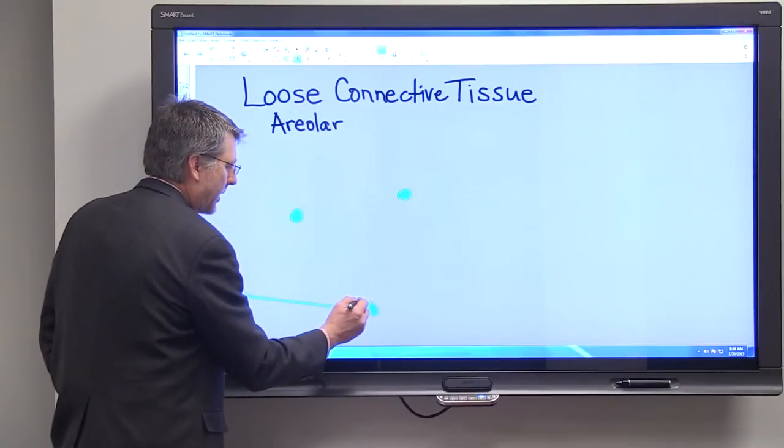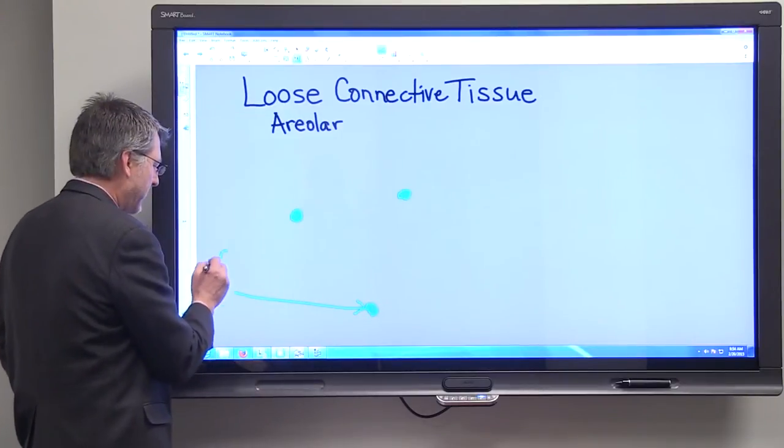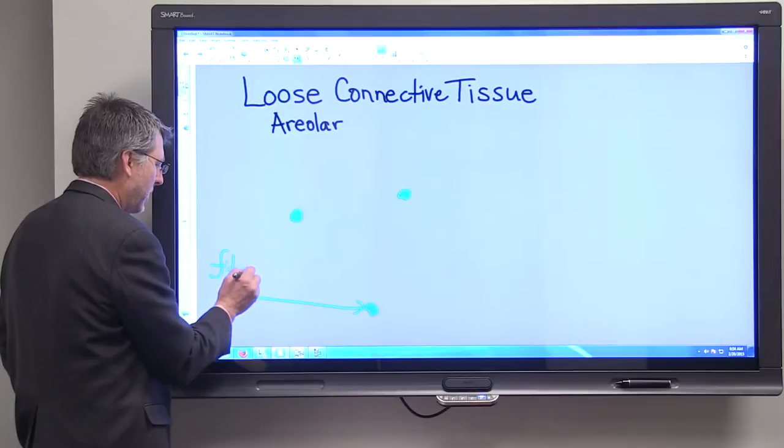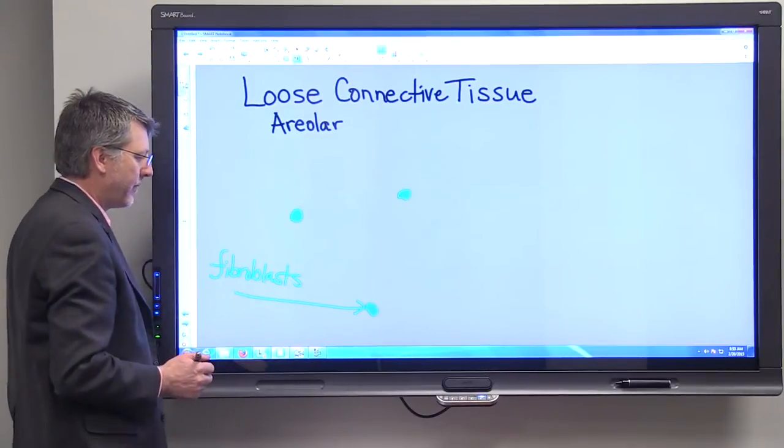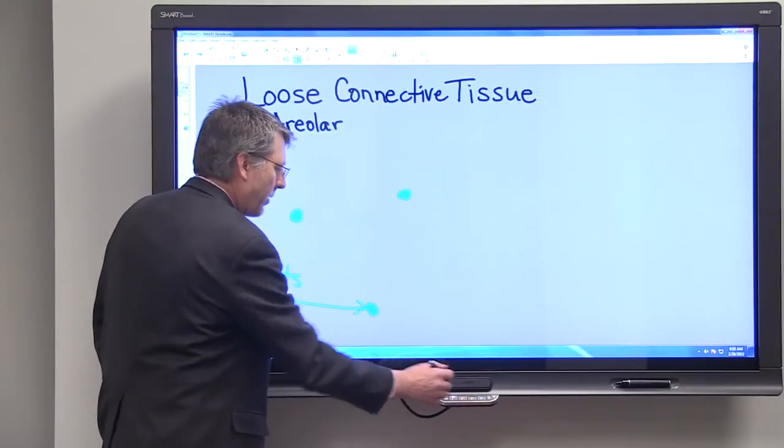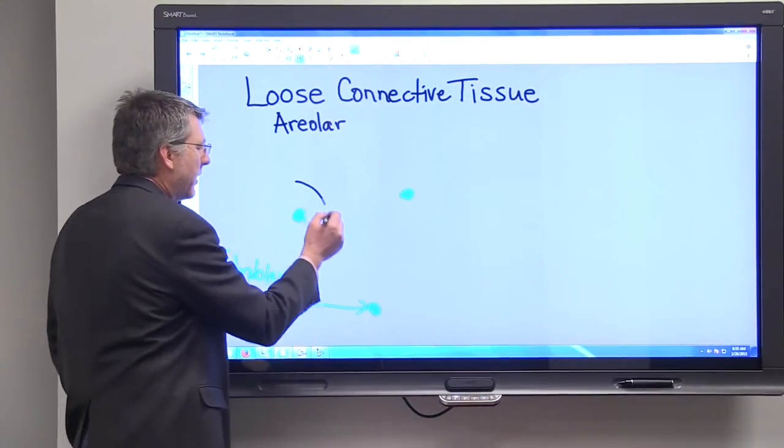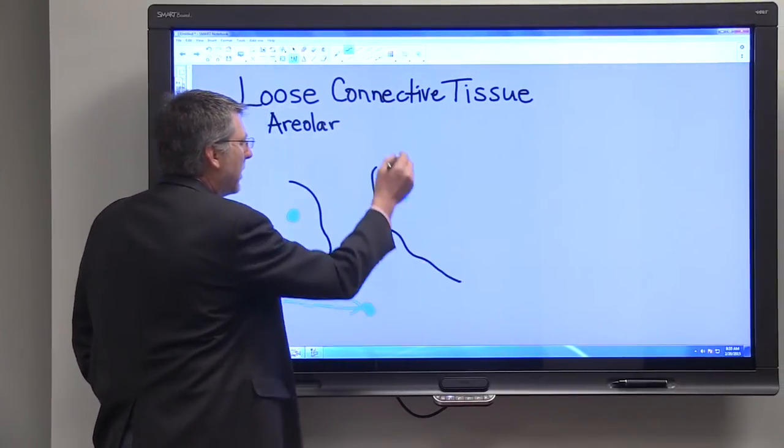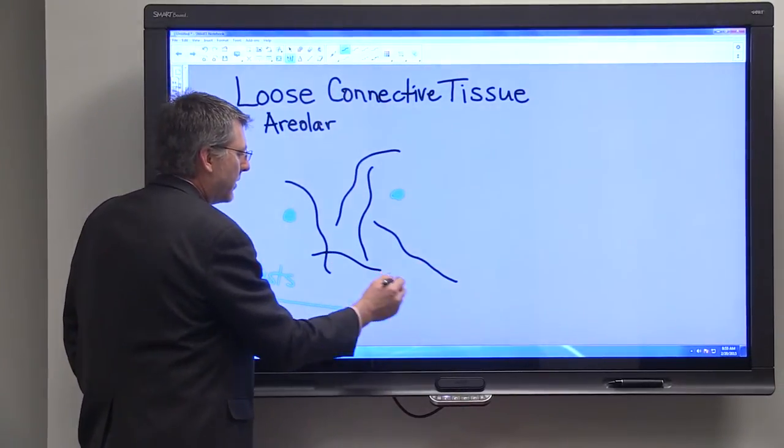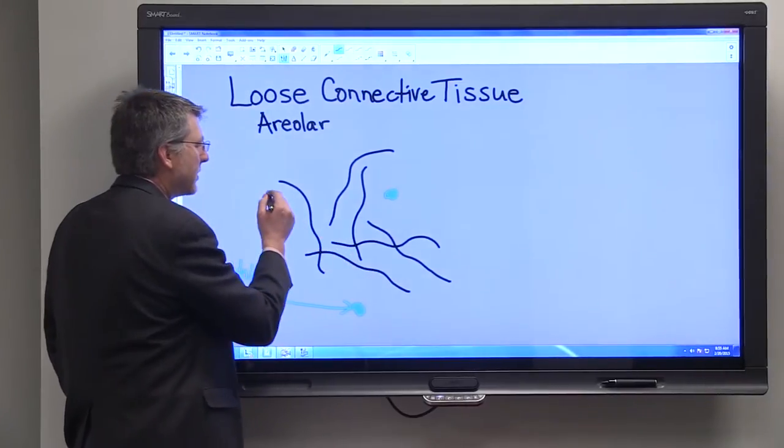Fibroblasts are the cells that secrete the matrix. What these fibroblasts will do is they will secrete fibers into this liquid ground substance.